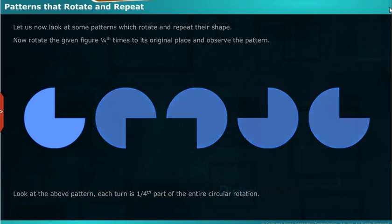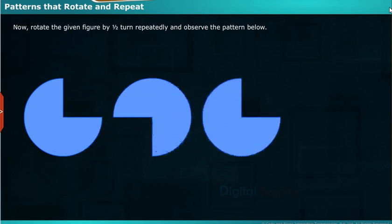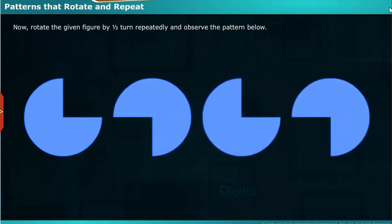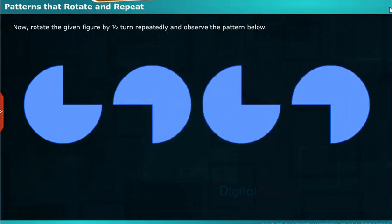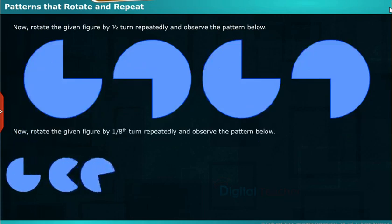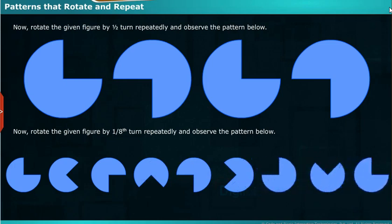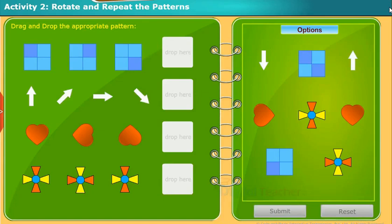Look at the above pattern. Each turn is one-fourth part of the entire circular rotation. Now rotate the given figure by one-half turn repeatedly and observe the pattern below. Now rotate the given figure by one-eighth turn repeatedly and observe the pattern below. Drag and drop the appropriate pattern.